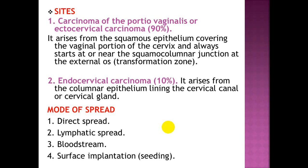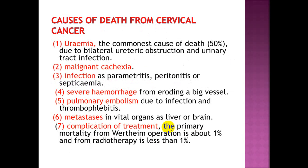The mode of spread includes direct spread, lymphatic spread, bloodstream, and surface implantation. Causes of death from cervical carcinoma include: uremia — the commonest cause of death, accounting for 50%, due to bilateral ureteral obstruction and urinary tract infection; malignant cachexia; infection such as parametritis, peritonitis, or septicemia; severe hemorrhage from eroding blood vessels; pulmonary embolism due to thrombophlebitis; and metastasis in vital organs such as liver or brain.